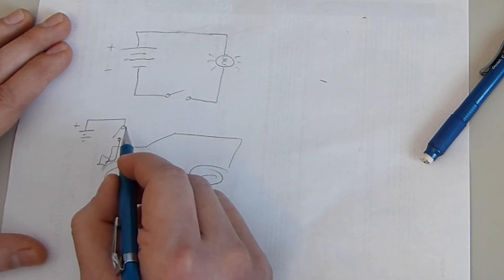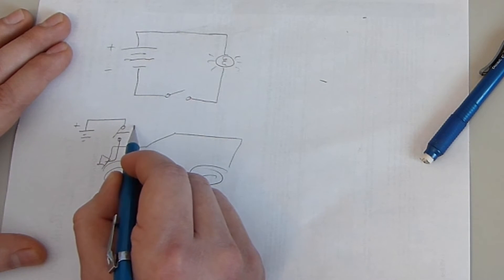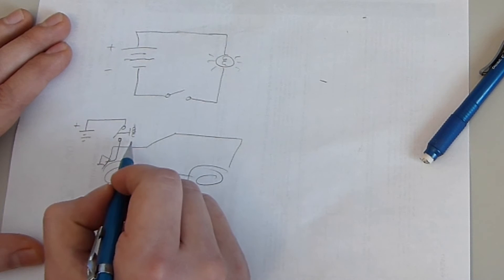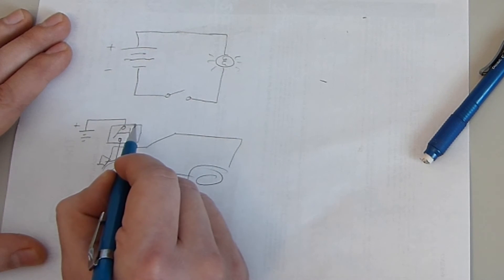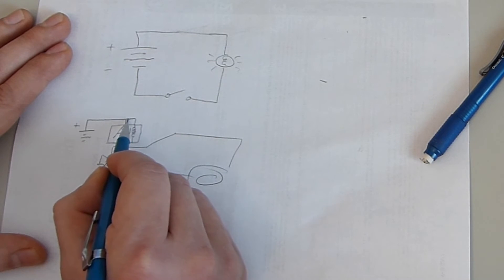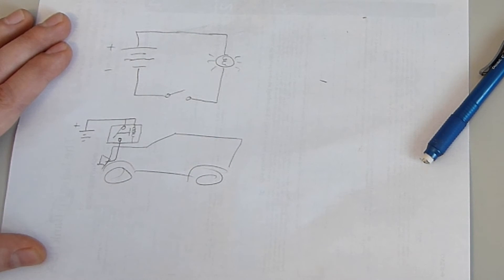There's positive and this relay is controlled by a coil. So that's your standard automotive relay. So let's hook the coil to that positive as well.